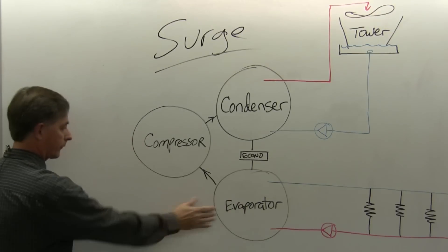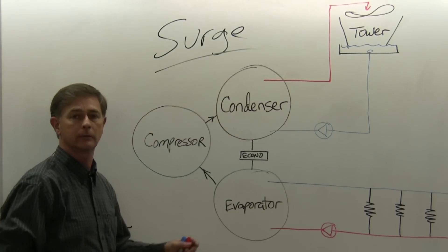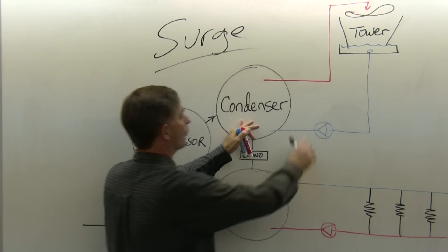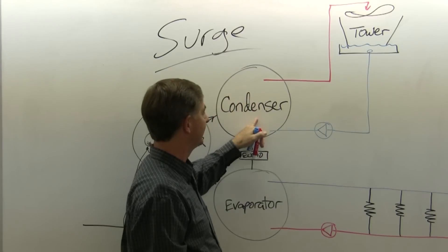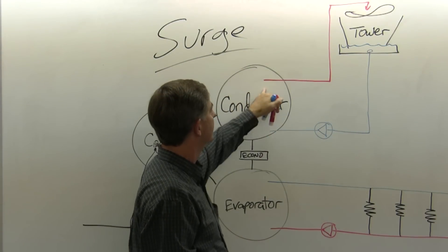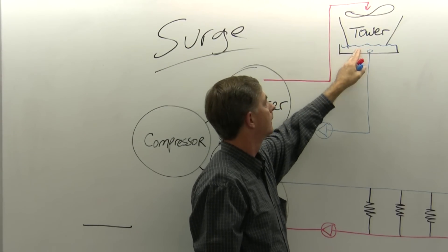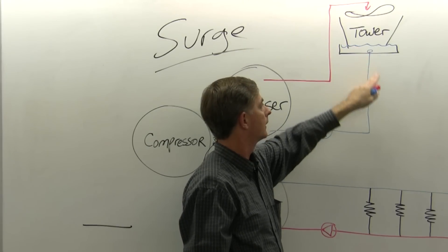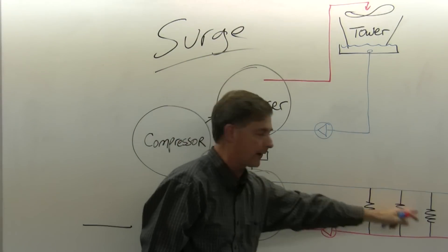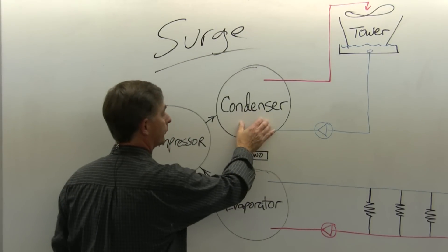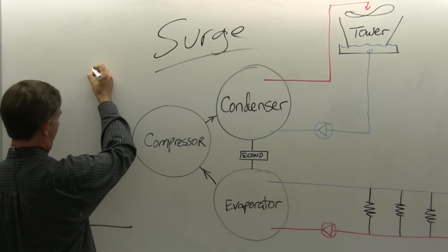This compressor takes this refrigerant at this pressure and it lifts it up to the condenser. This condenser takes water from the tower, heat exchange from the warm refrigerant into the tower water, sends it out to the tower, goes in the tower, flows through the tower fill, cools through evaporation, and returns through your pump back to the condenser. The temperature and pressure of this vessel, I'm going to represent with a mark, that pressure is right there.